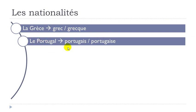Le Portugal — portugais, portugaise. Listen carefully: portugais, portugaise. As usually when we have nationalities ending with -ais, the feminine form adds a Z sound. The difference between the masculine form and the feminine form: masculine, portugais — you don't pronounce the S; feminine form, portugaise — you pronounce this Z sound.